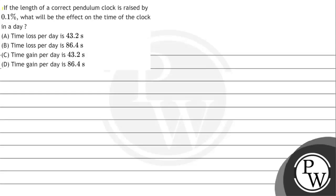Hello, let's read the given question. If the length of a correct pendulum clock is raised by 0.1 percent, what will be the effect on the time of the clock in a day? Option A: time loss per day is 43.2 seconds. Option B: time loss per day is 86.4 seconds. Option C: time gain per day is 43.2 seconds. Option D: time gain per day is 86.4 seconds.